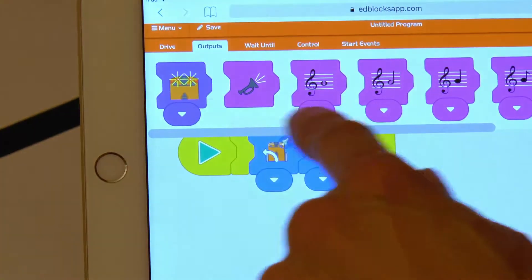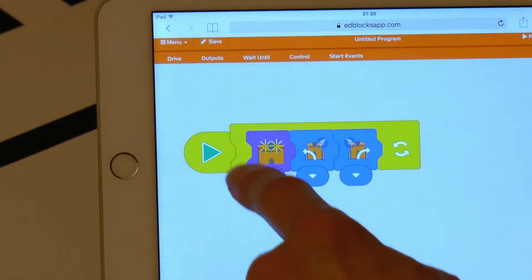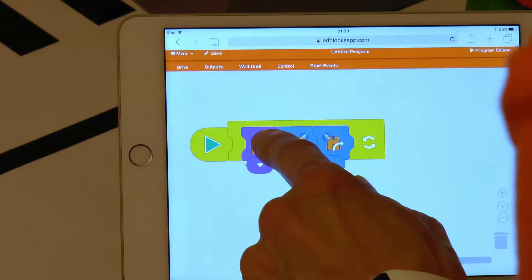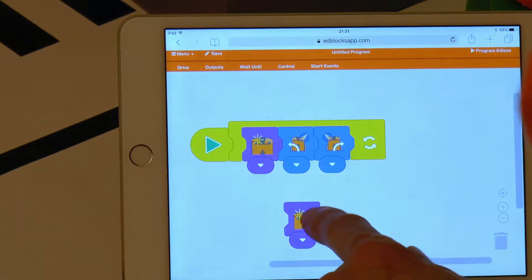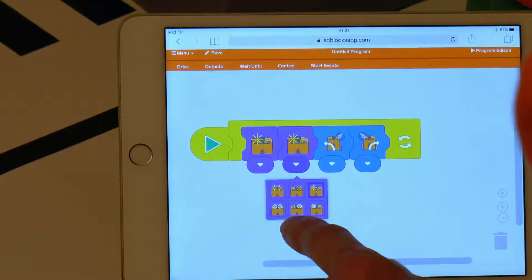I'll update the program to make it power Edison's LED lamps according to the turn direction, for example away from light. These blocks are located in the menu section Outputs.